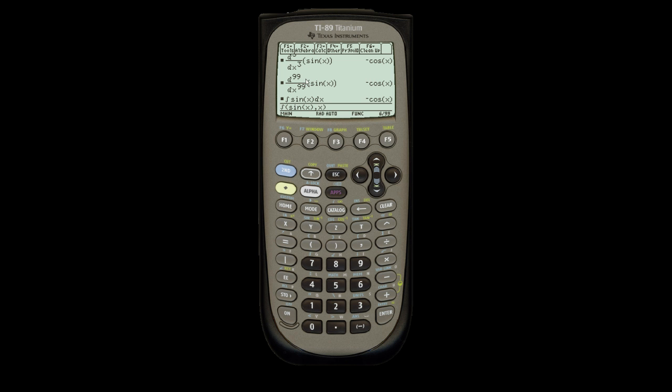Same as before, if I want to put in bounds, I can do it the same way. Comma, upper bound, which is going to be pi over 2. Comma, lower bound. I'm going to make this 3 pi over 6.